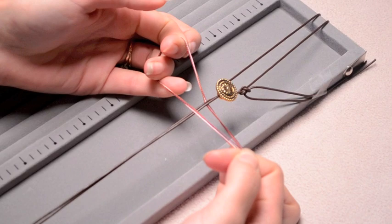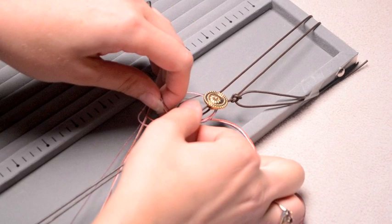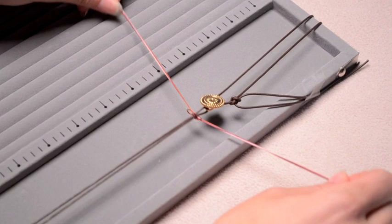And then you're going to take your right grouping and bring it underneath and through. So I'm going underneath the leather and through the loop that you just made, and bringing it through and then pulling it tight.